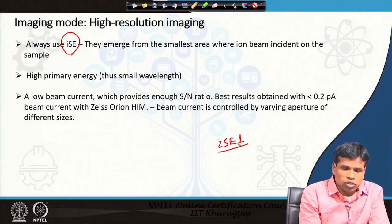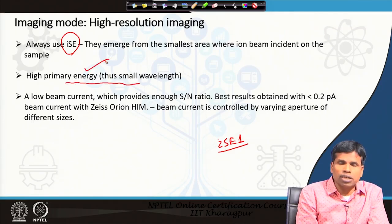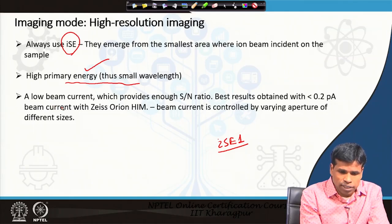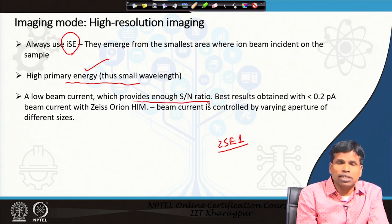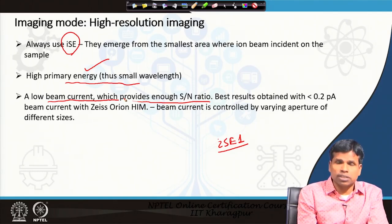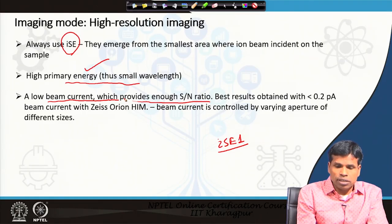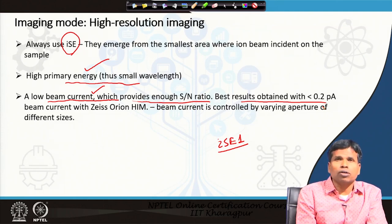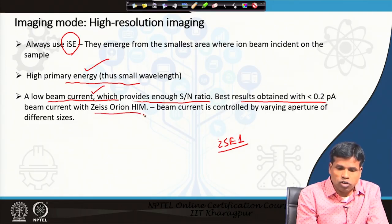For high resolution imaging we should use higher primary energy, giving a smaller wavelength, which means a smaller spot size and better resolution. Low beam current is also important — it provides enough signal as long as the signal-to-noise ratio is sufficient. Low beam current means less surface damage and less charging when the sample is insulating, thereby giving the best resolution. The best results are obtained with a beam current less than 0.2 picoampere in a Zeiss Orion helium ion microscope.